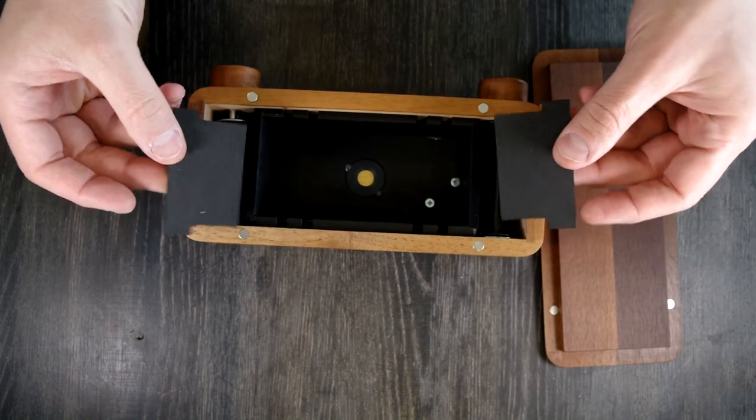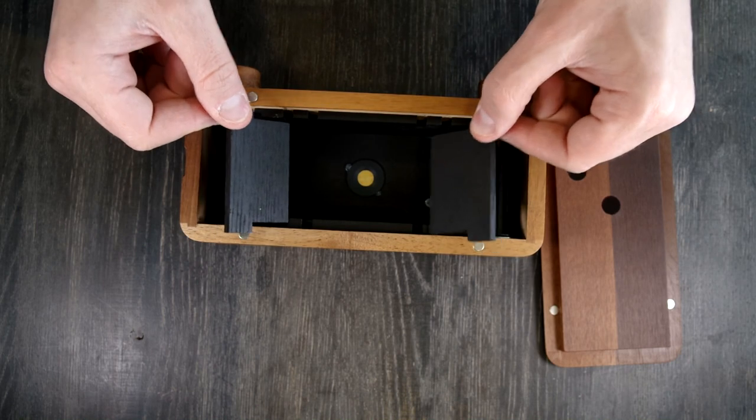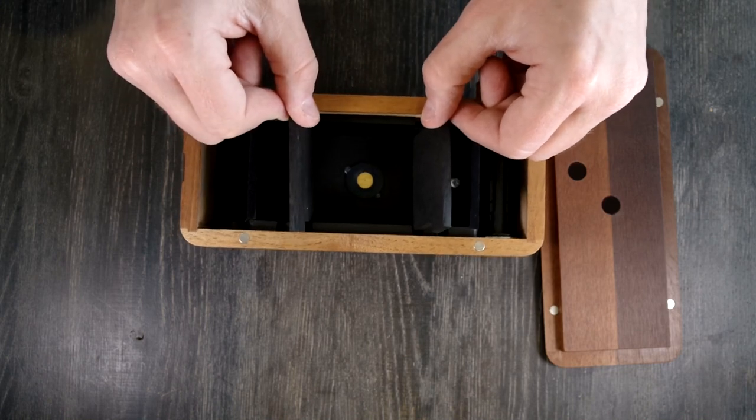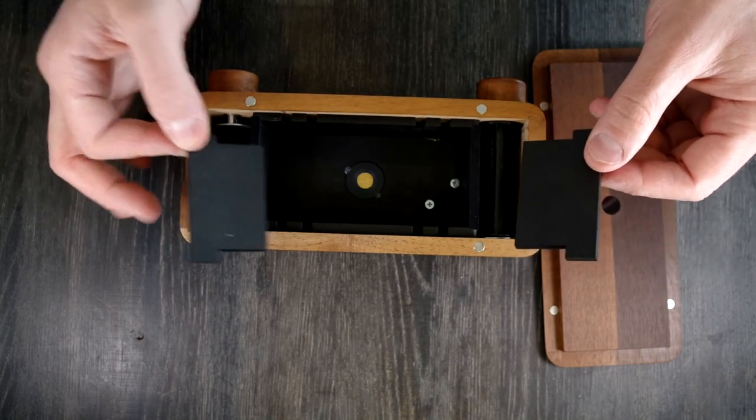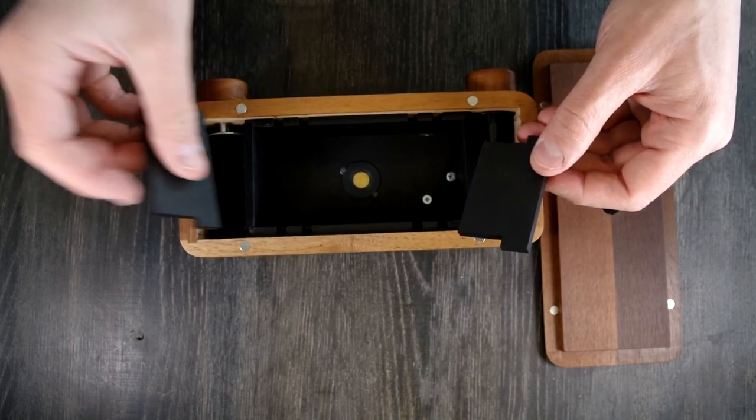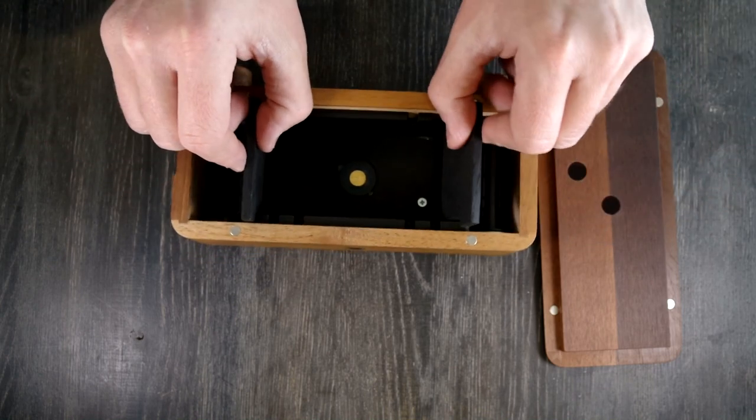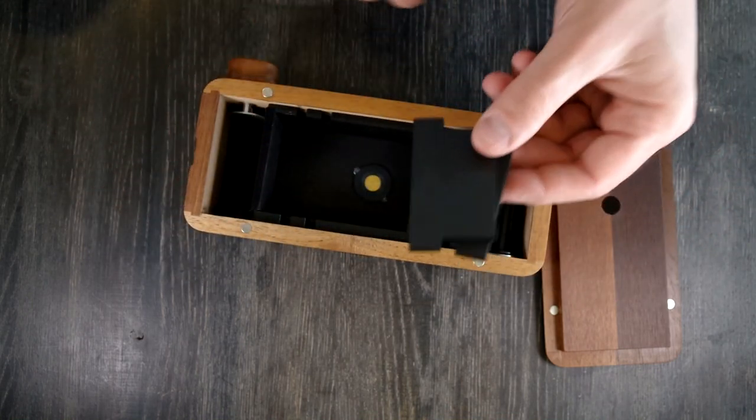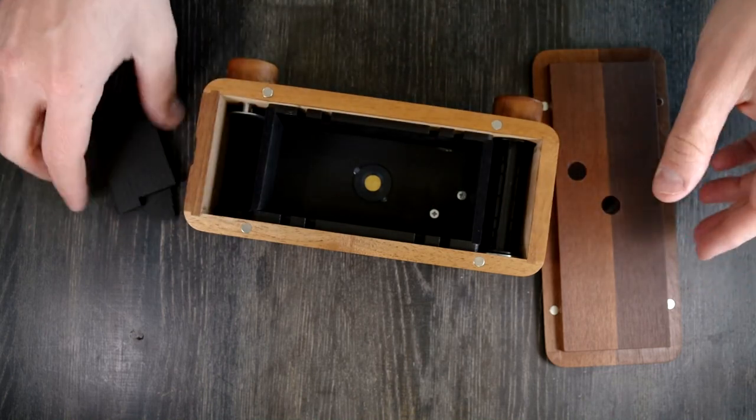Then we have these removable bits that govern which format you're using. If you take them both out, you're using 6x12. If you put them in the outer set of slots, that's 6x9, and this is 6x6 if you put them in the middle slots. If there is one failing in this camera, there is no place to store these when you're not using them. Ideally, this camera should have been made just a little bit wider so that when you shoot 6x12, these could slide in here. Because if you lose them, then you are only shooting 6x12 and you lose the multi-format capabilities.